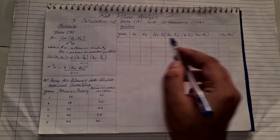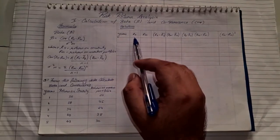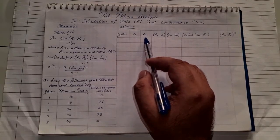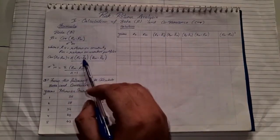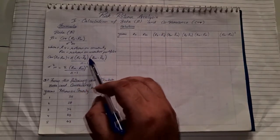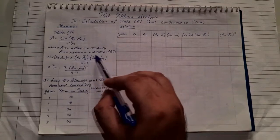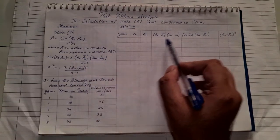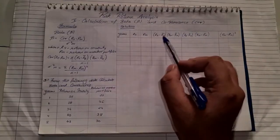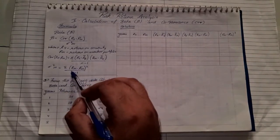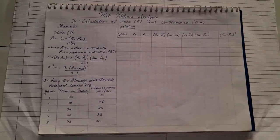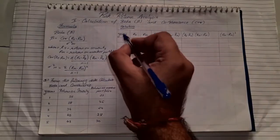Our table will have columns for: years, return on security, return on market portfolio, then the columns required for covariance — RS minus R-bar-S, RM minus R-bar-M, and their product. The last column will be (RM minus R-bar-M) squared, which is needed for standard deviation squared M.